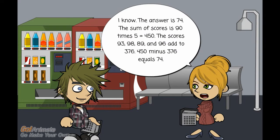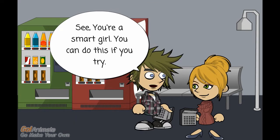The answer is 74. The sum of scores is 90 times 5 equals 450. The scores 93, 98, 89, and 96 add to 376. 450 minus 376 equals 74. You're a smart girl — you can do this if you try.